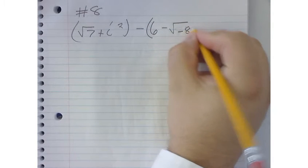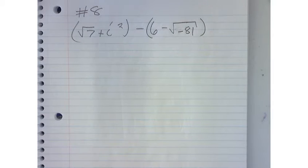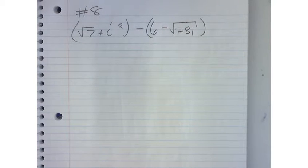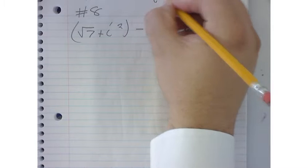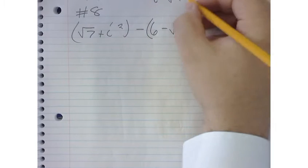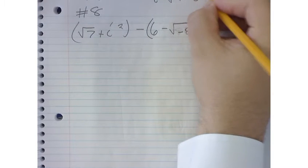Negative 81. Well, we're just going to do what we normally do. Now remember a couple of things. We said that i is equal to the square root of negative 1, and that i squared was equal to negative 1.